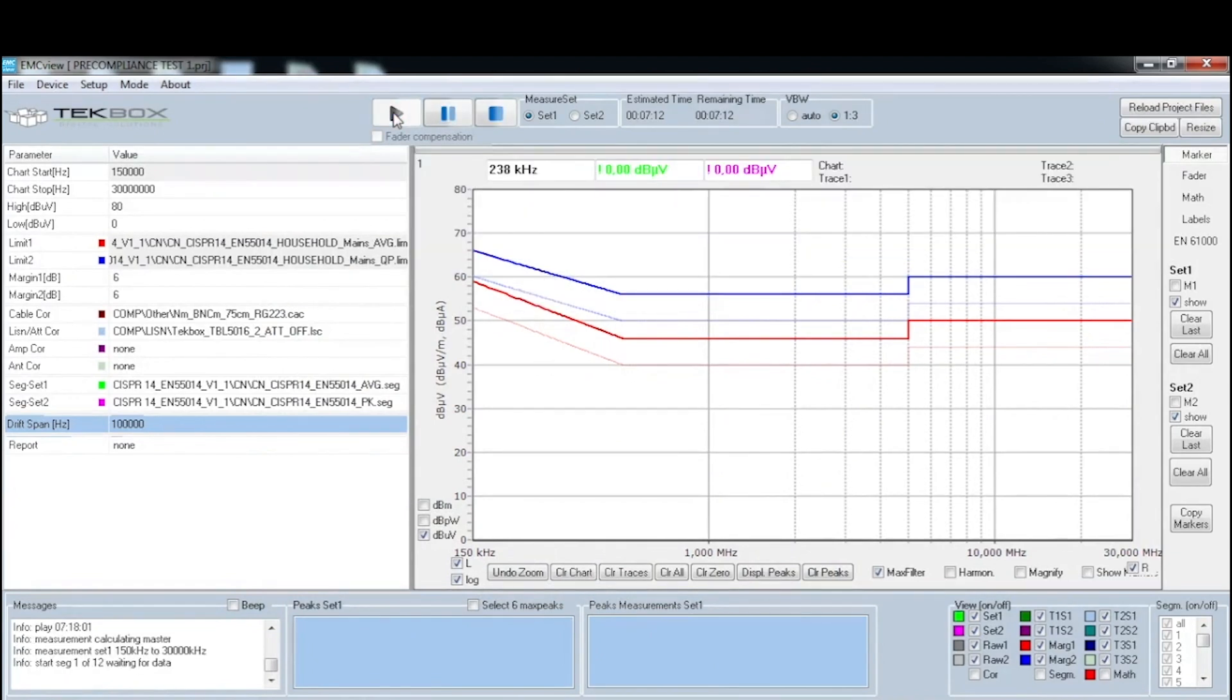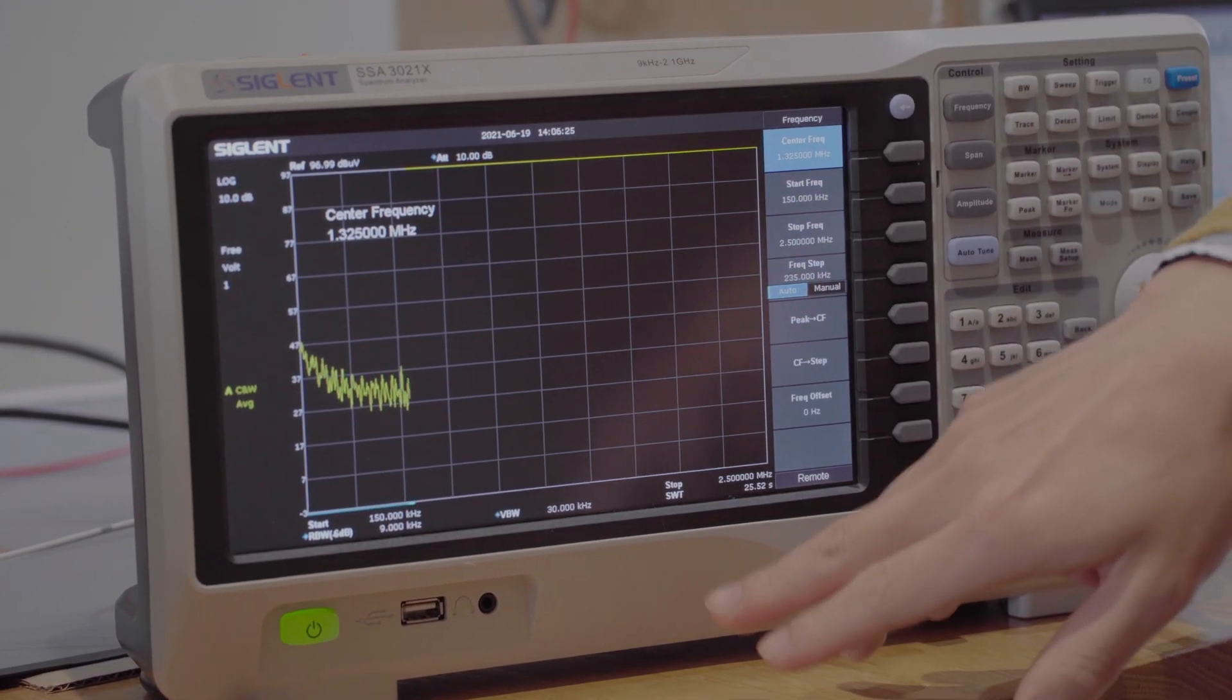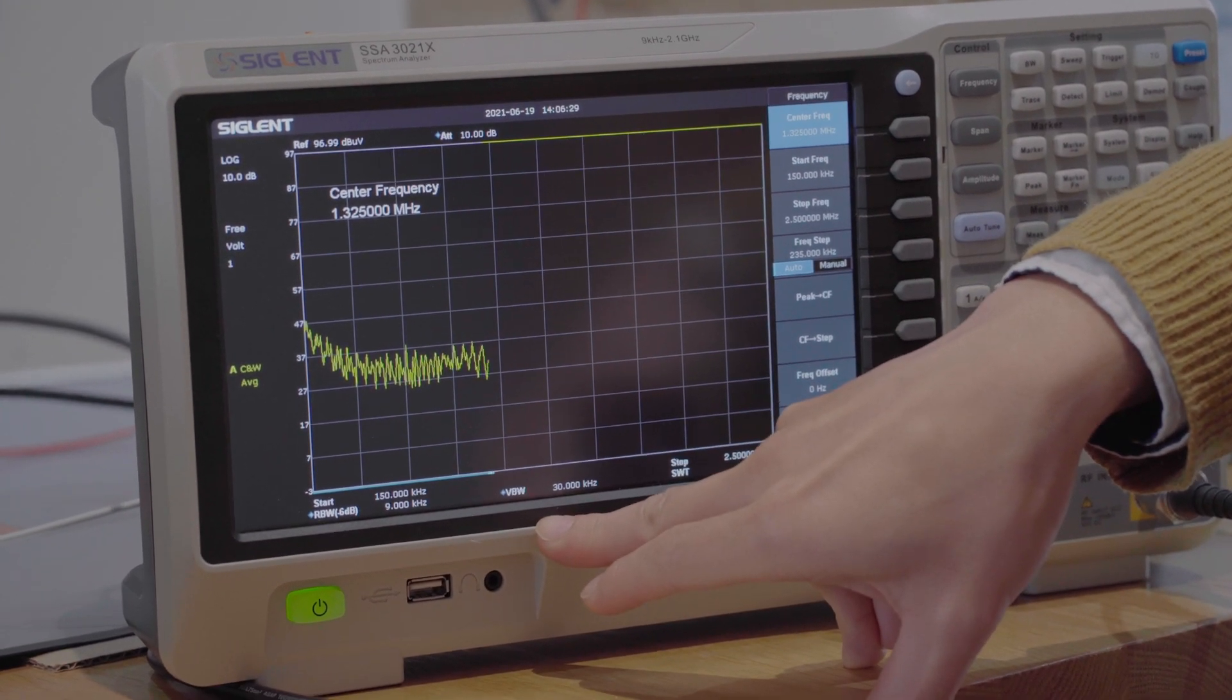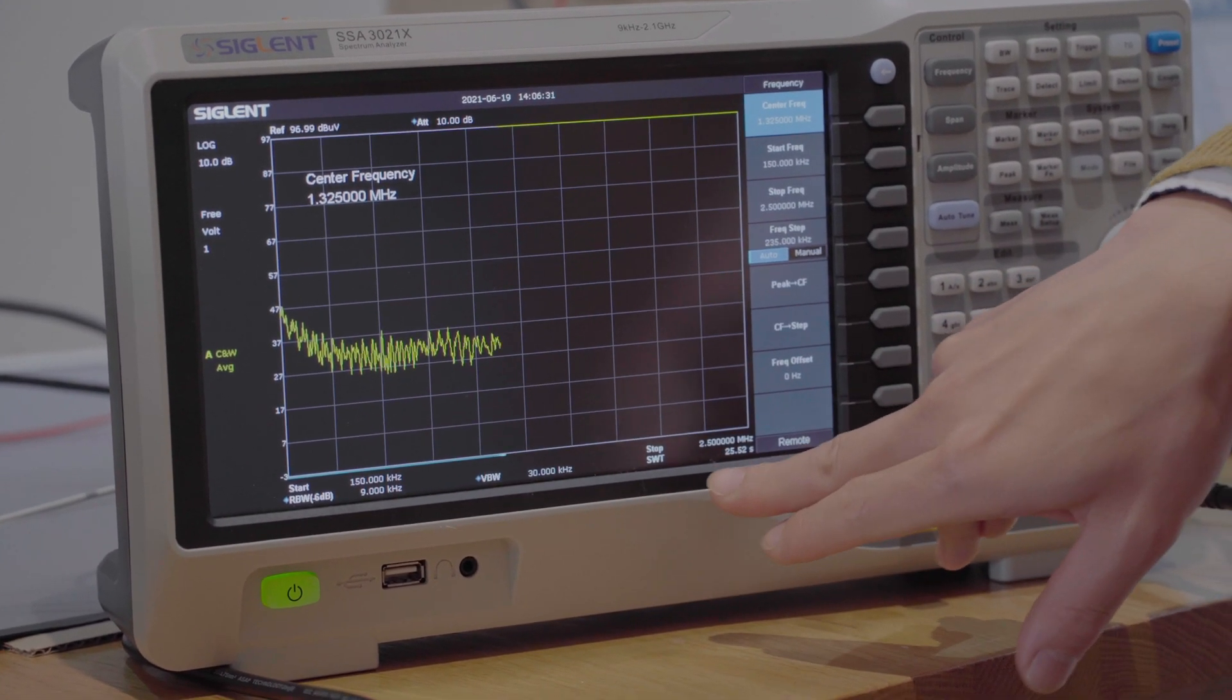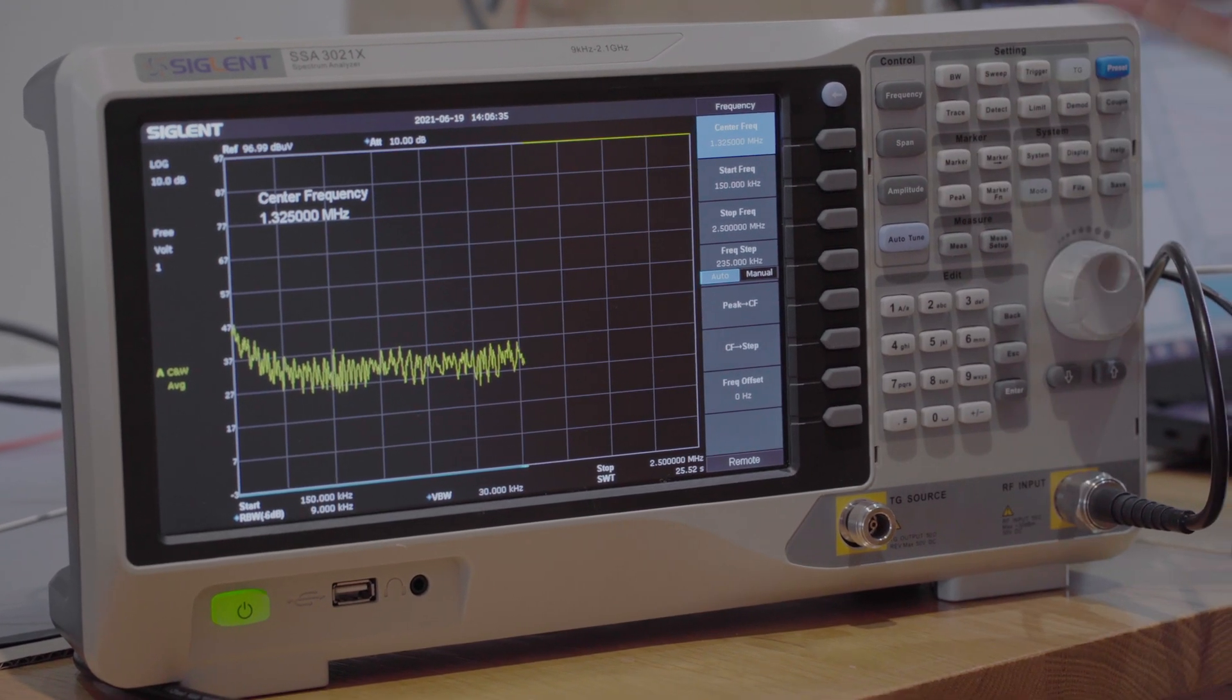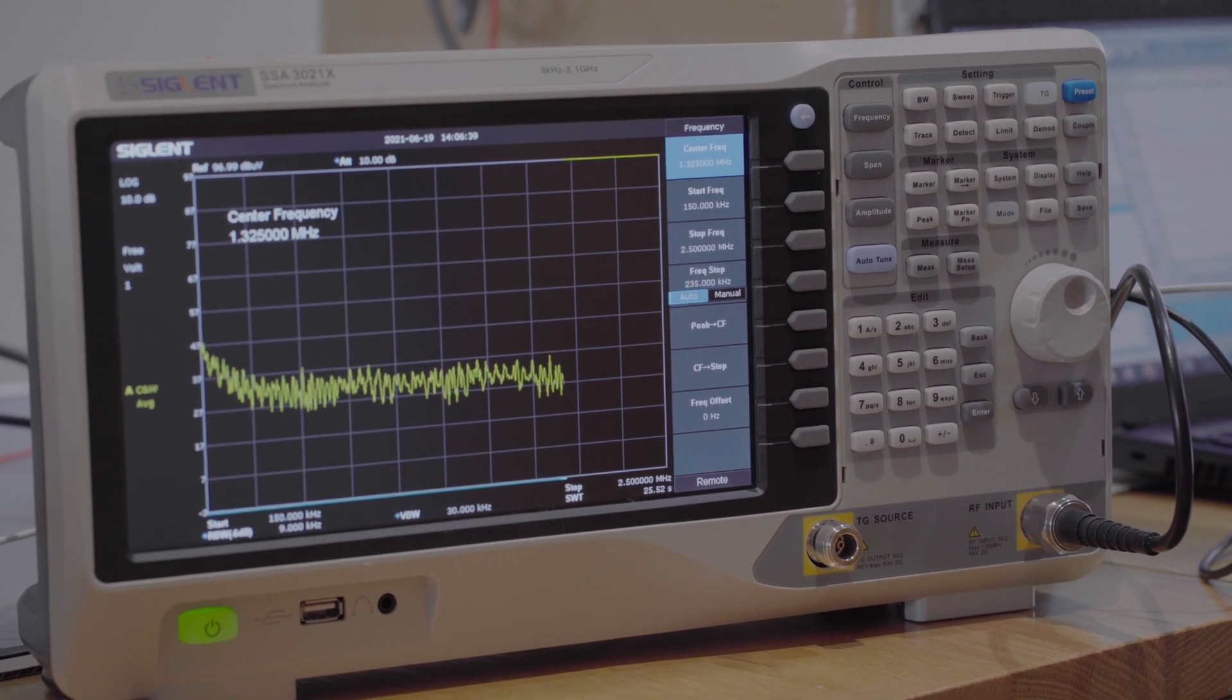So now we're going to click start. And as you can see, the software basically sends commands to my spectrum analyzer. The scanning started now. All the resolution bandwidth, video bandwidth, and stop and start frequency has been predefined in the segment file.